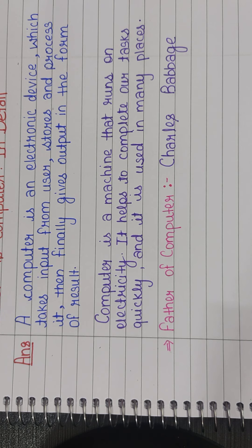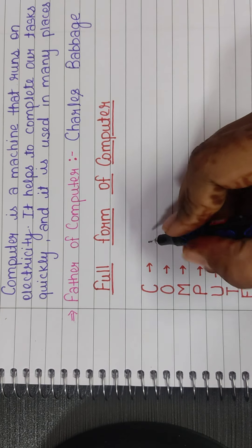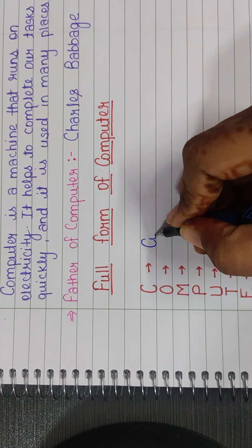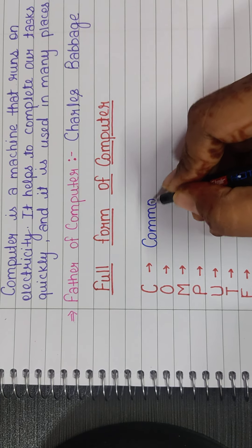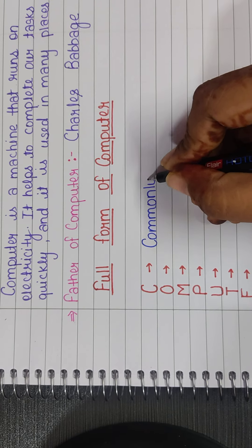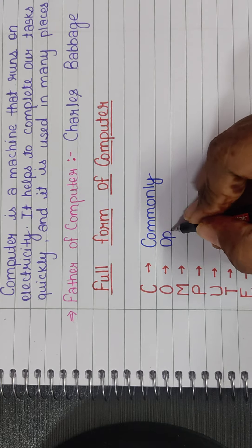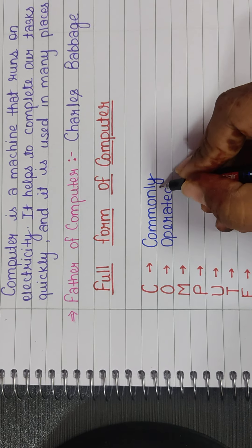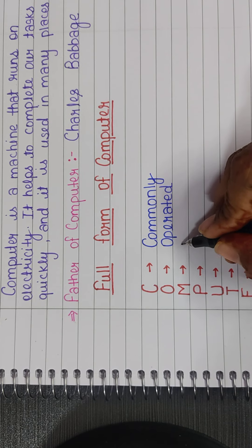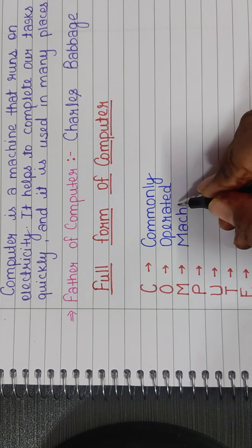What is the full form of computer? C for commonly, O for operated, M-A-C-H-I-N-E machine.